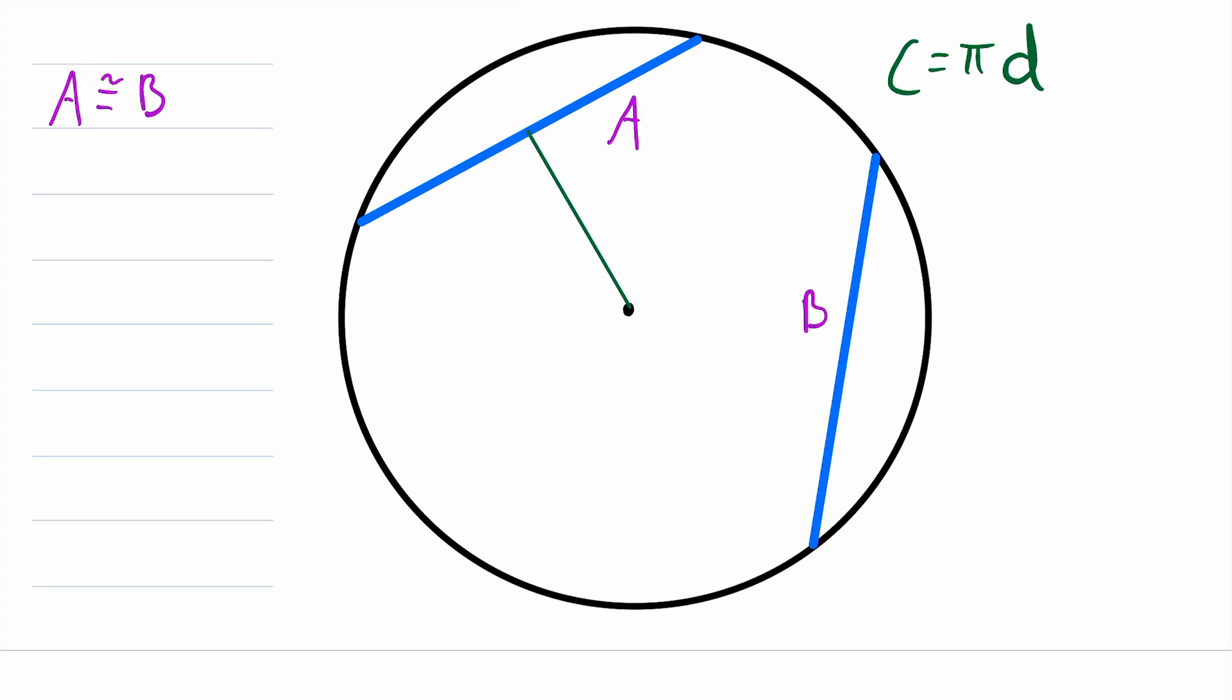One of which is that these two chords are equidistant from the center of the circle. So since the distance from the center of the circle to both of these chords is equal, these two green line segments have to be congruent. I'll put one little hash mark on each line segment to indicate that they are congruent.